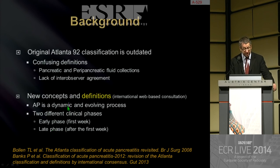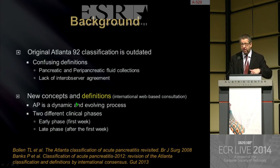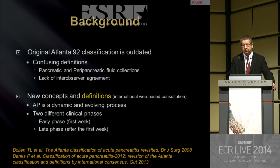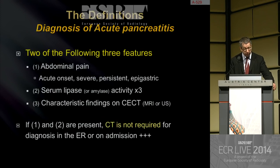Because acute pancreatitis is a dynamic and evolving process, you will find that there are two mortality peaks. The biggest one in the early phase, due to organ failure — and we will stress that point — and a second mortality peak due to local complications. The first definition concerns the diagnosis of acute pancreatitis.